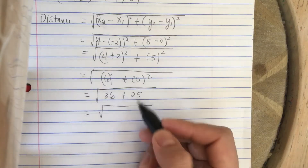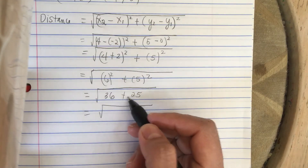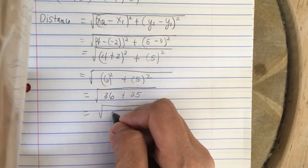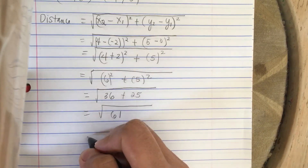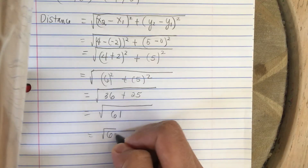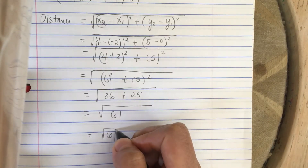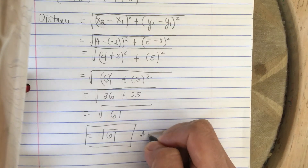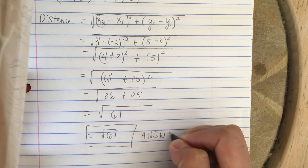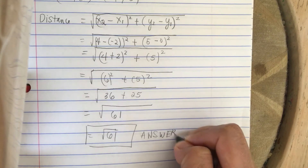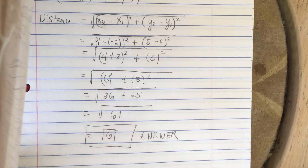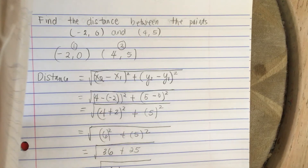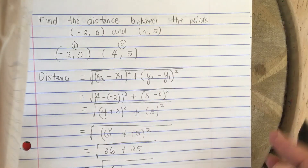36 plus 25 is equal to 61, so the answer is the square root of 61. And that's how you find the distance between two points.